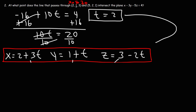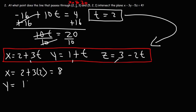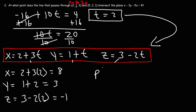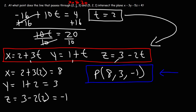Adding 16 to both sides: 4 plus 16 is 20. Dividing both sides by 10, we get t equals 2. Now let's plug this value into the parametric equations. x is 2 plus 3 times 2, that's 6 plus 2 which is 8. y is 1 plus 2, which is 3. And z is 3 minus 2 times 2, so that's 3 minus 4, which is negative 1. So the point of intersection is (8, 3, -1). Now you know how to find a point of intersection between a line and a plane.